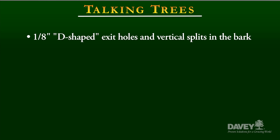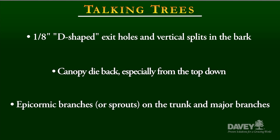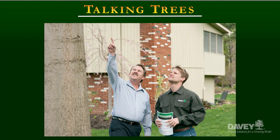It all starts with identification. Do you have an ash tree? Is the Emerald Ash Borer in your neighborhood? Once you've answered yes to these questions, it's time to bring an arborist out to the site to take a look at your trees and determine if anything needs to be done. Here are a few things to look for: D-shaped exit holes and vertical splits in the bark; canopy dieback, especially from the top down; and epicormic branches, or sprouts, on the main stem and major branches that signify the tree is not healthy. Inspection is critical, particularly since proactive treatment is the best approach. Please consider working with a professional arborist — many will provide free inspections as part of the estimate process.